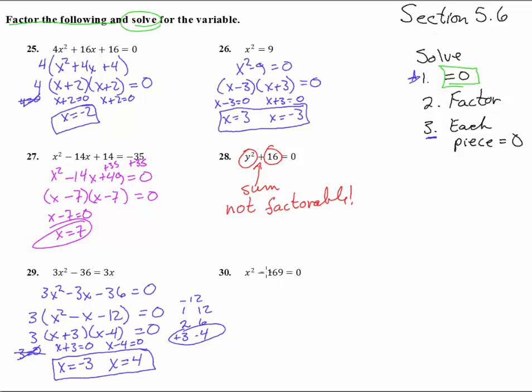Now we'll try number 30. We're already equal to zero. So step number two, we're going to factor it. This is a perfect square, that's a perfect square, and that's a difference. So we can do this. This is x plus 13 times x minus 13 equals zero.